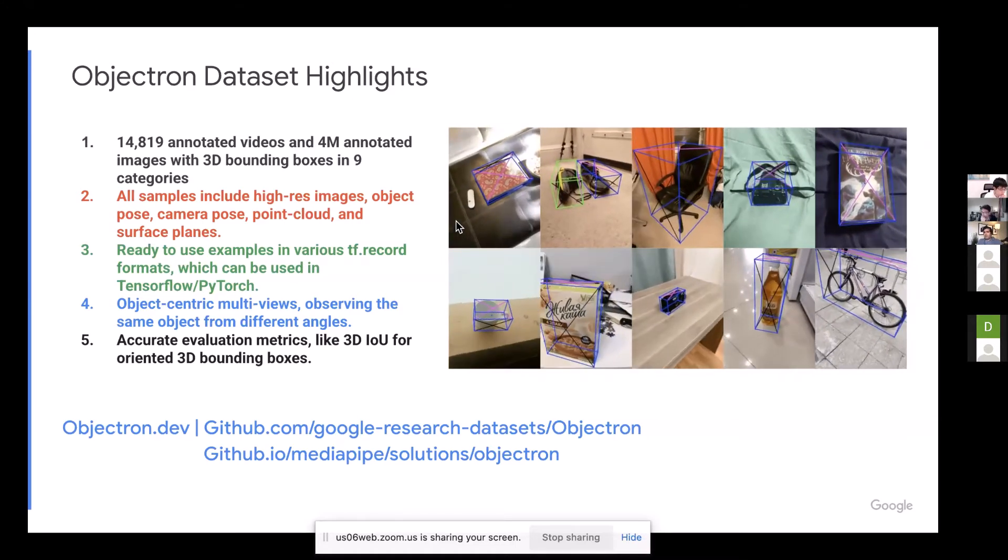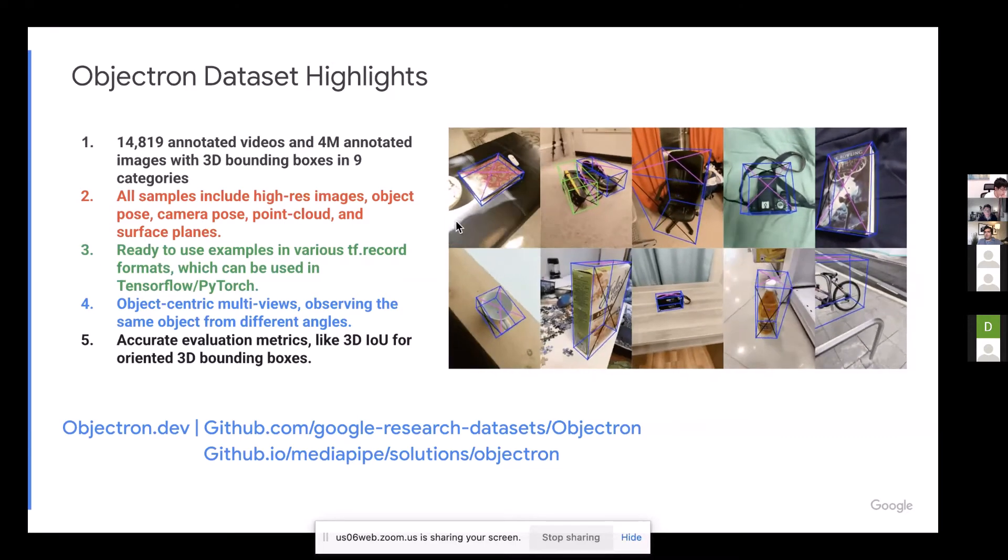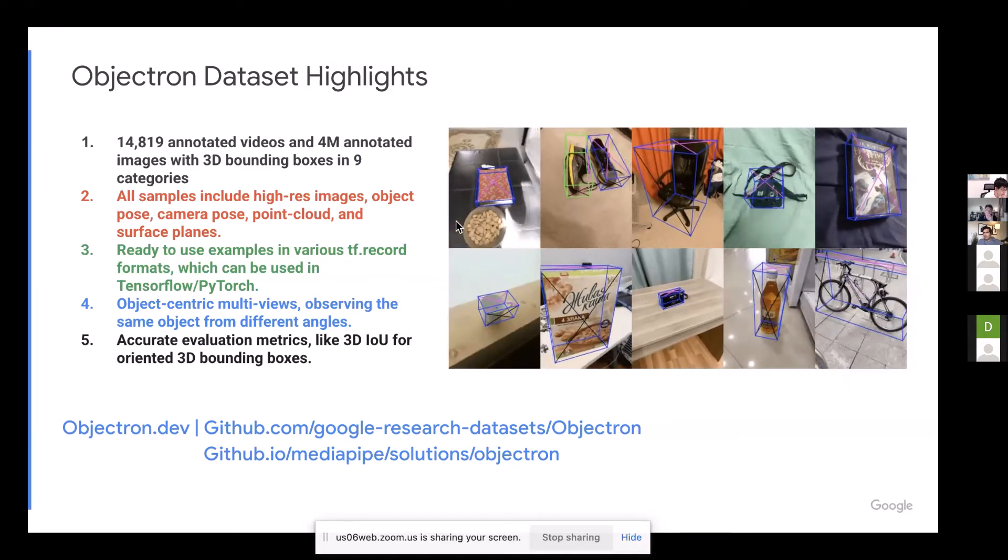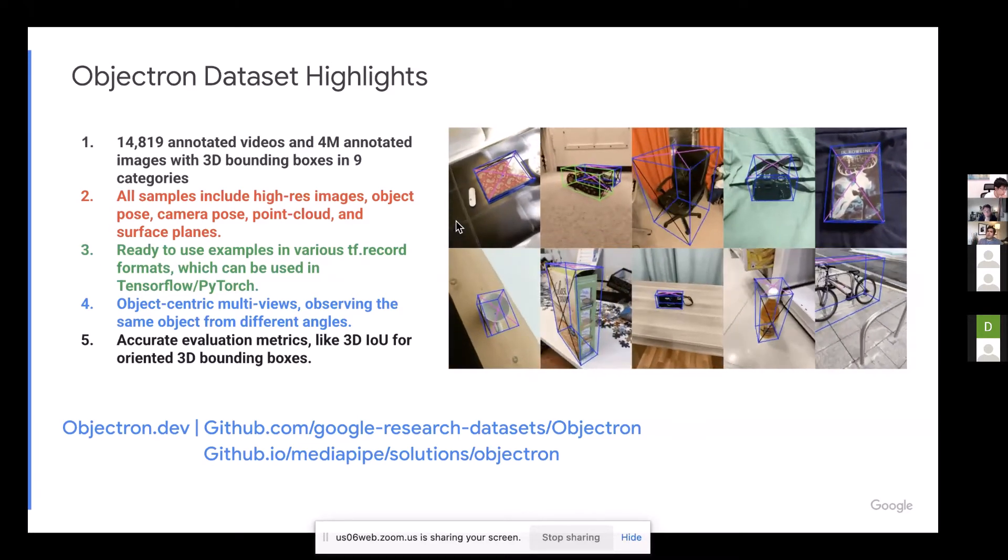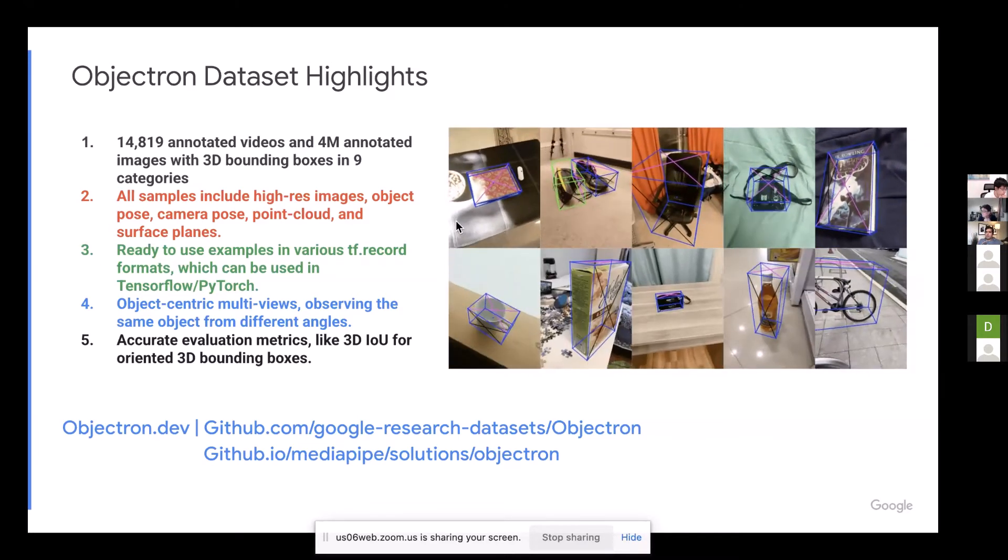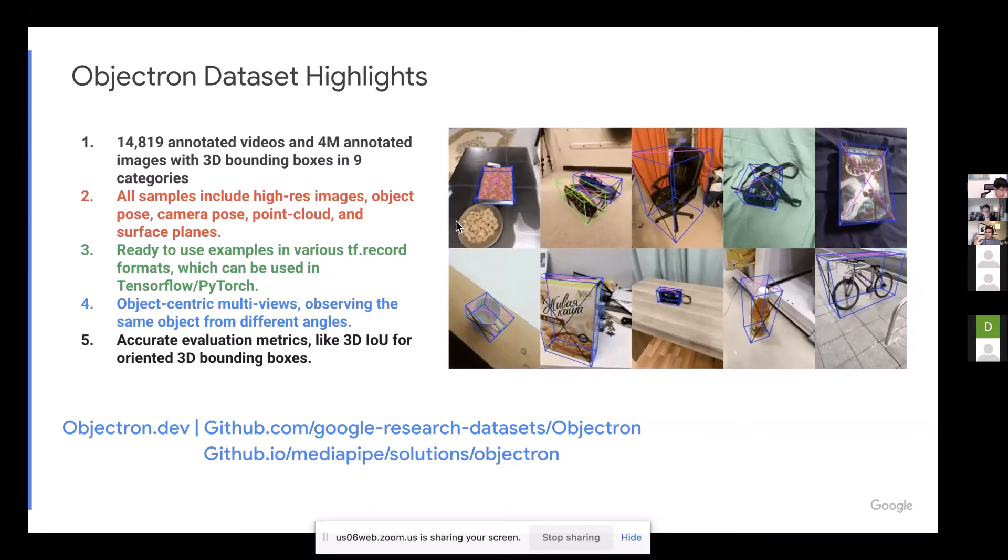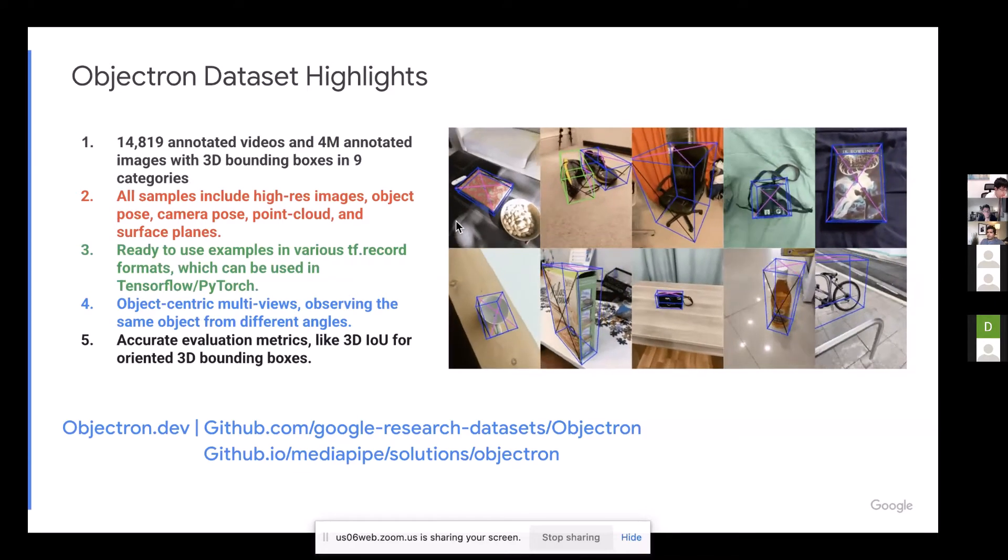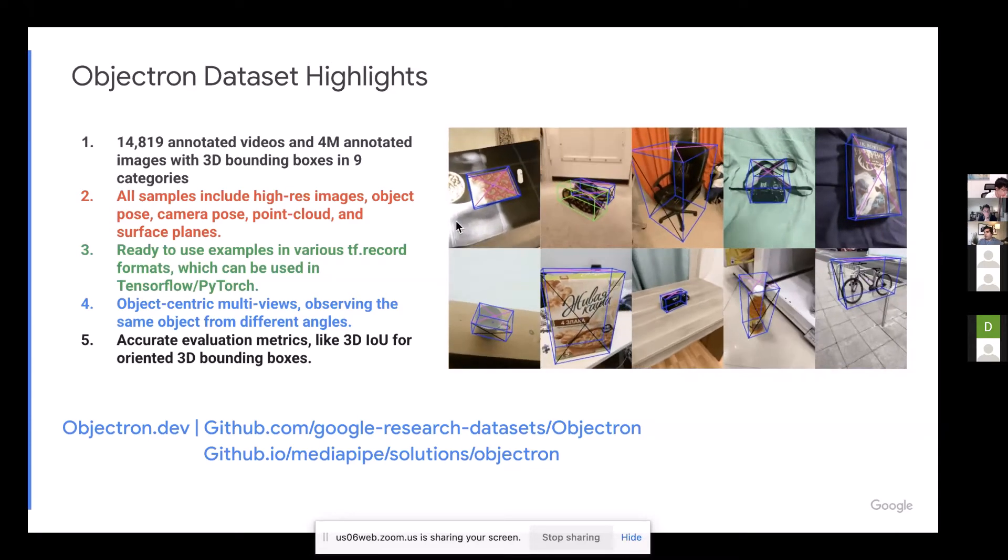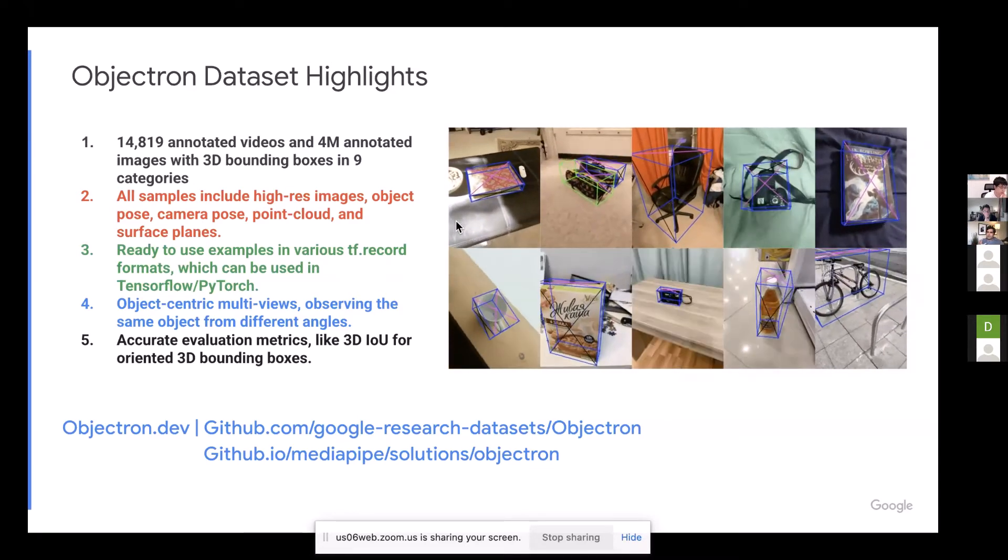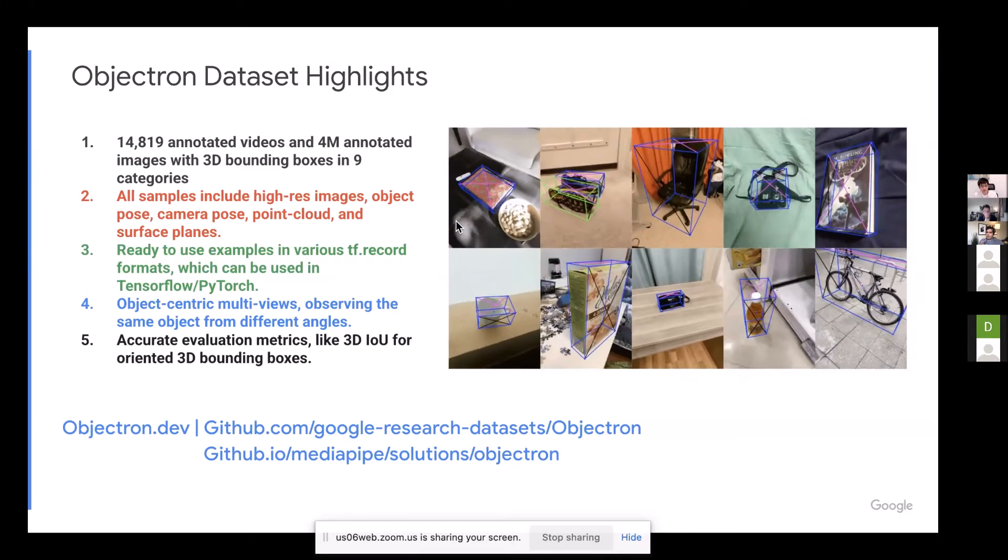Overall, we roughly collected about 50,000 videos, and that translates to about 4 million annotated images in nine different categories. And these categories, they range from small objects, like cups and shoes, to basically large ones, like chairs and bicycles. So there are deformable objects and rigid ones, like you have both bikes and you have cameras. And there are objects with symmetries that makes the problem kind of difficult, for example, cups and bottles.